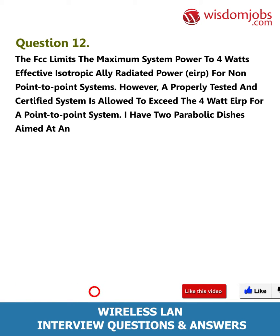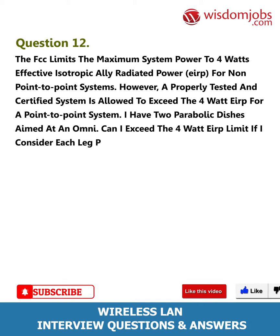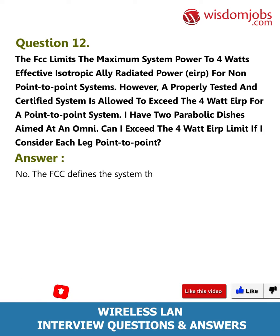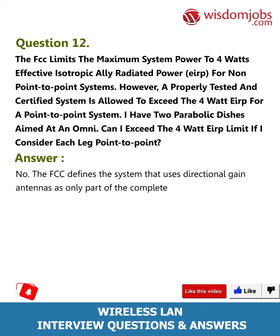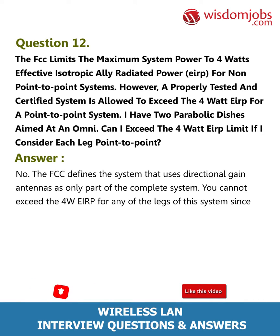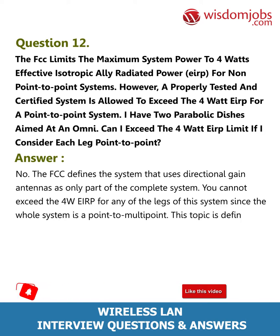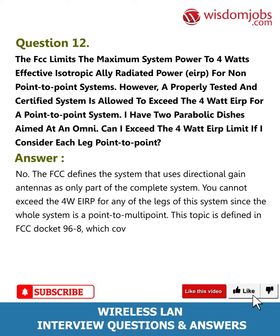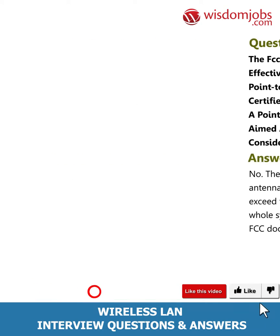can I exceed the 4 watts EIRP limit if I consider each leg point-to-point? Answer: No. The FCC defines a system that uses directional gain antennas as only part of the complete system. You cannot exceed 4 watts EIRP for any of the legs of this system, since the whole system is point-to-multipoint. This topic is defined in FCC Docket 96-8, which covers the spread spectrum transmitter.